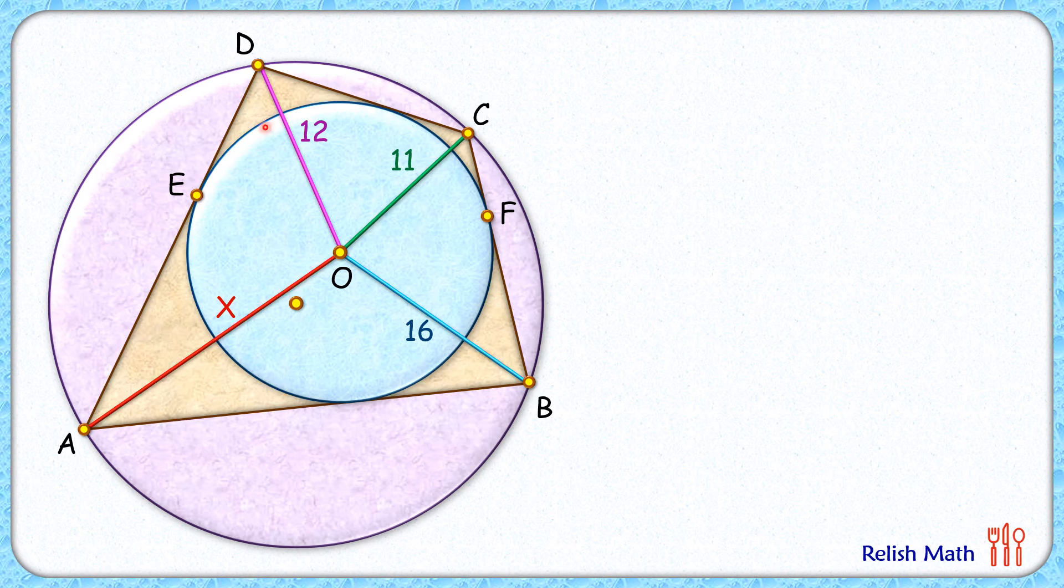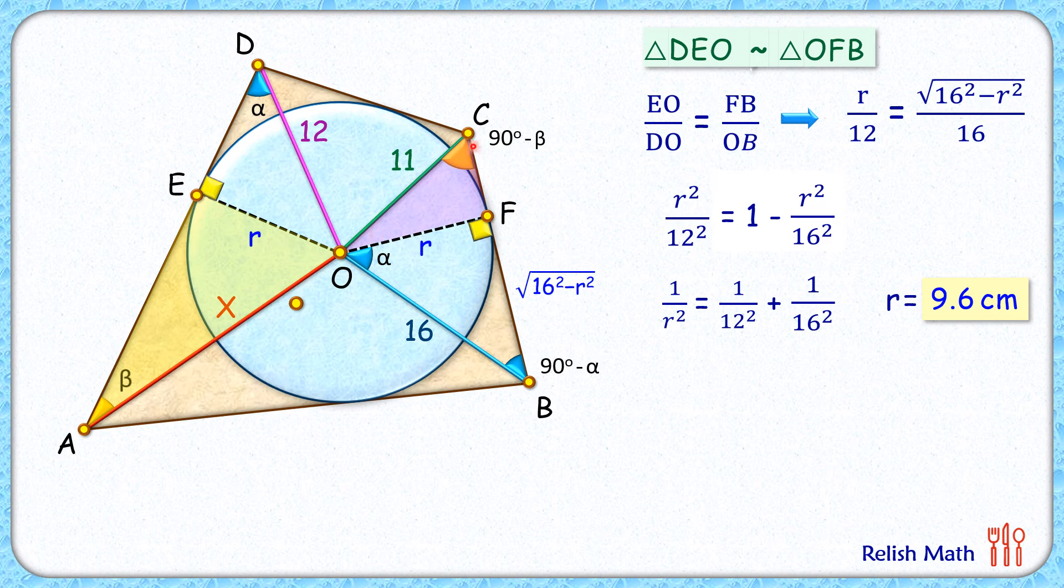But the main point is, if I am finding this inradius from point A and C, it should still hold true. If we solve with respect to triangle AEO and triangle CFO, we can again prove them to be similar and take the ratio of corresponding sides. We'll get the same result, but instead of 12 and 16, it will become 11 and x.